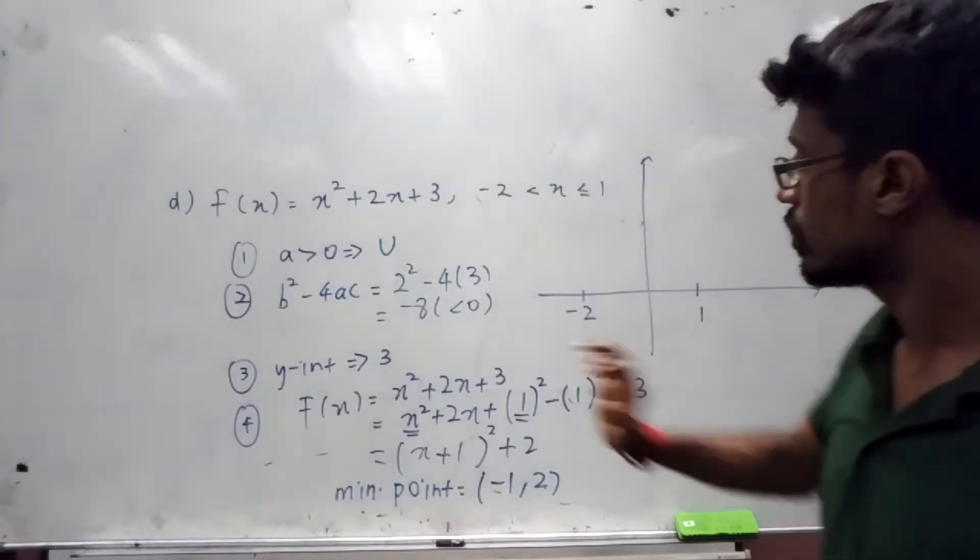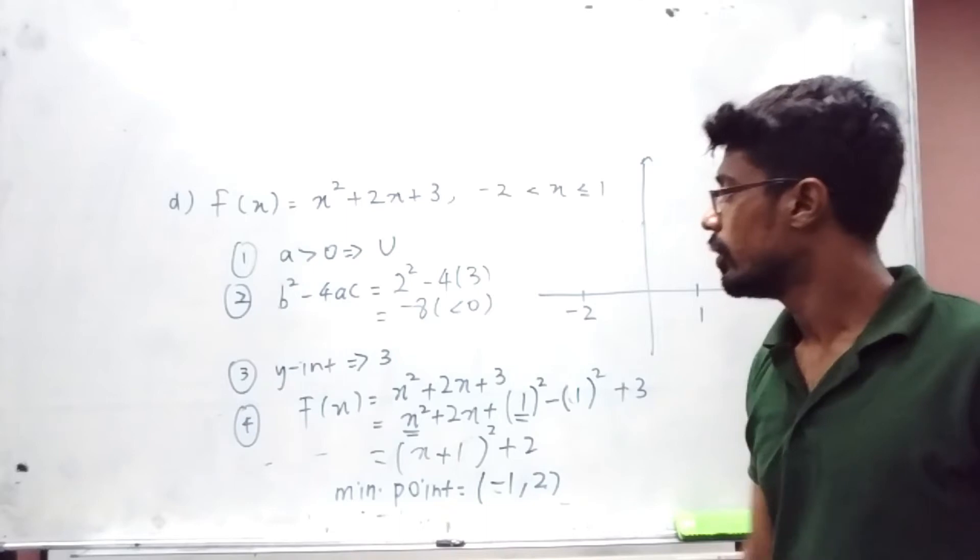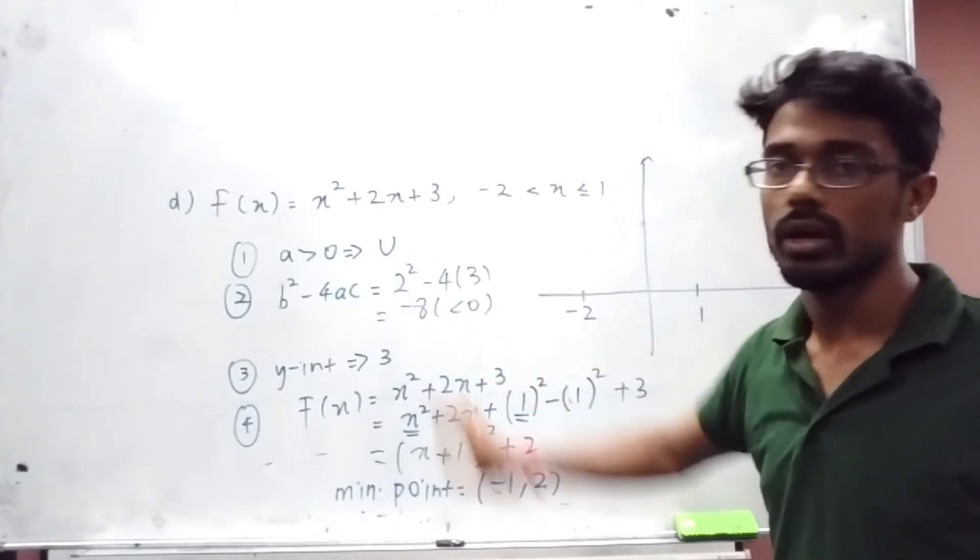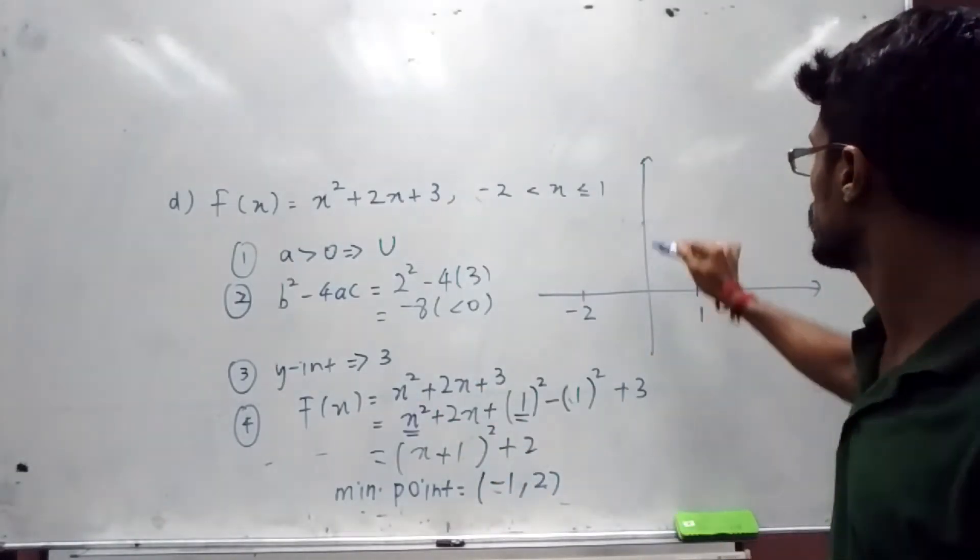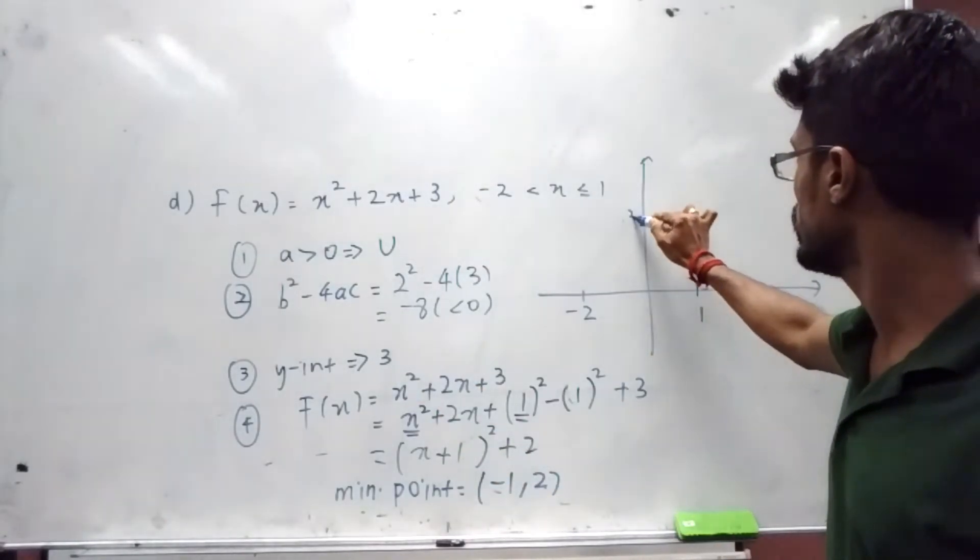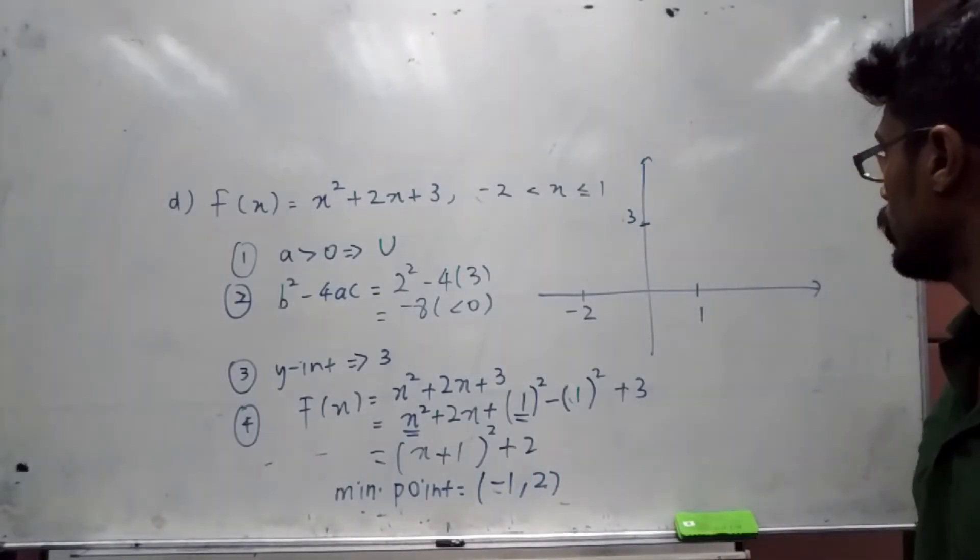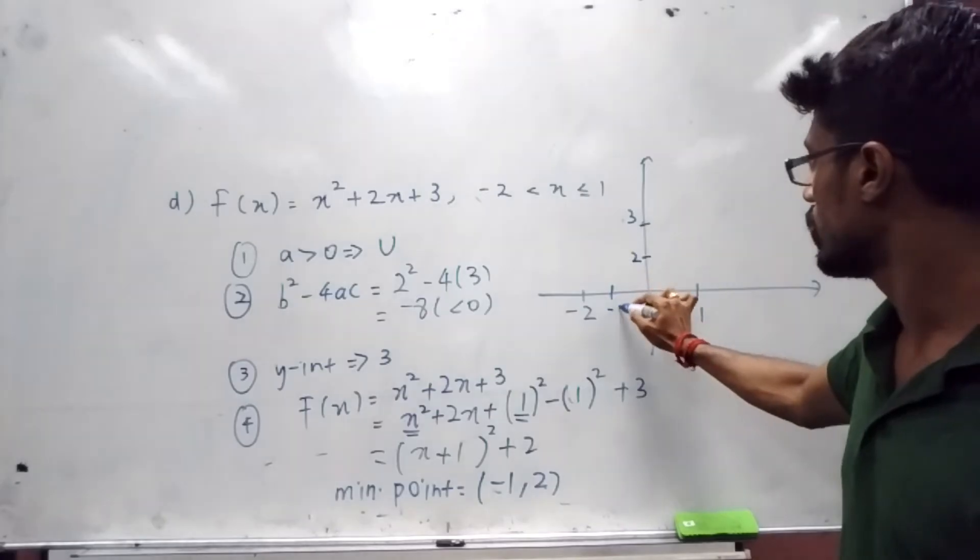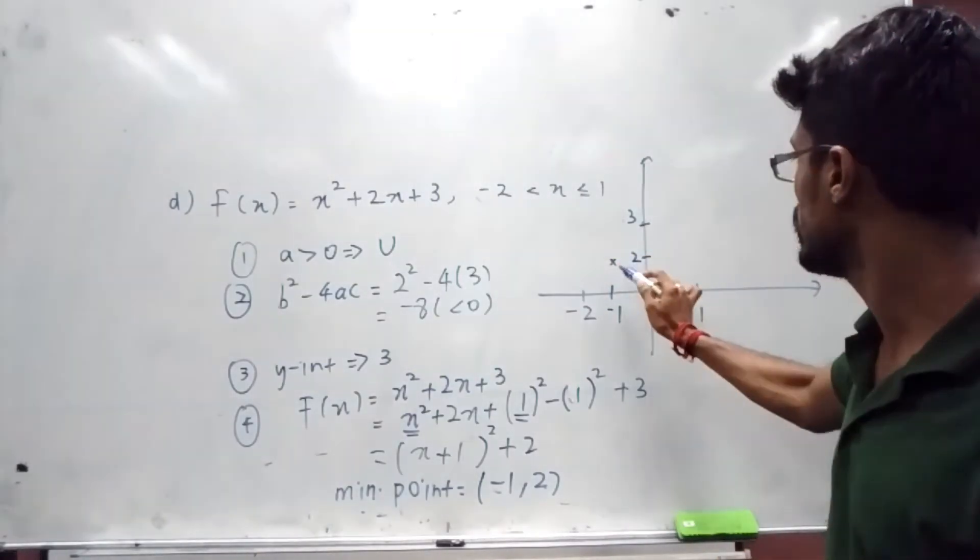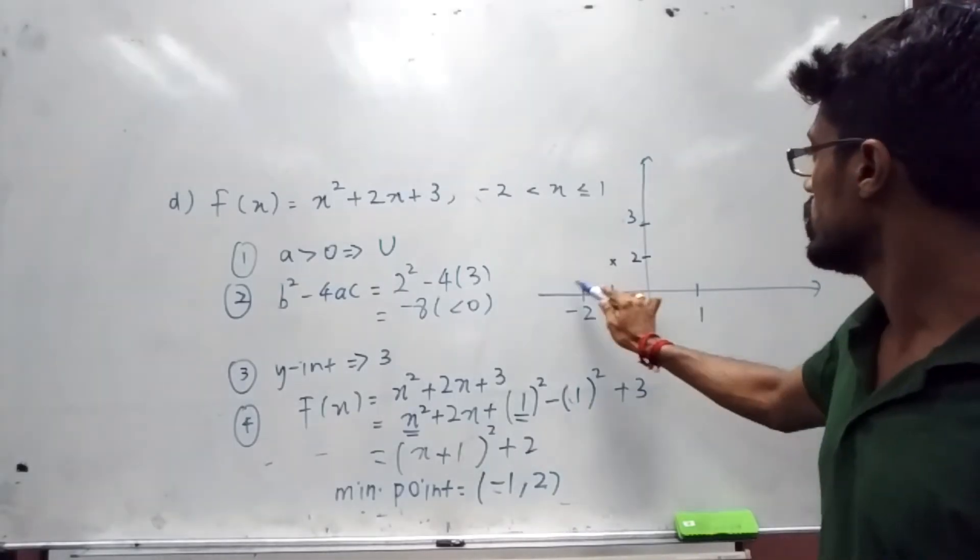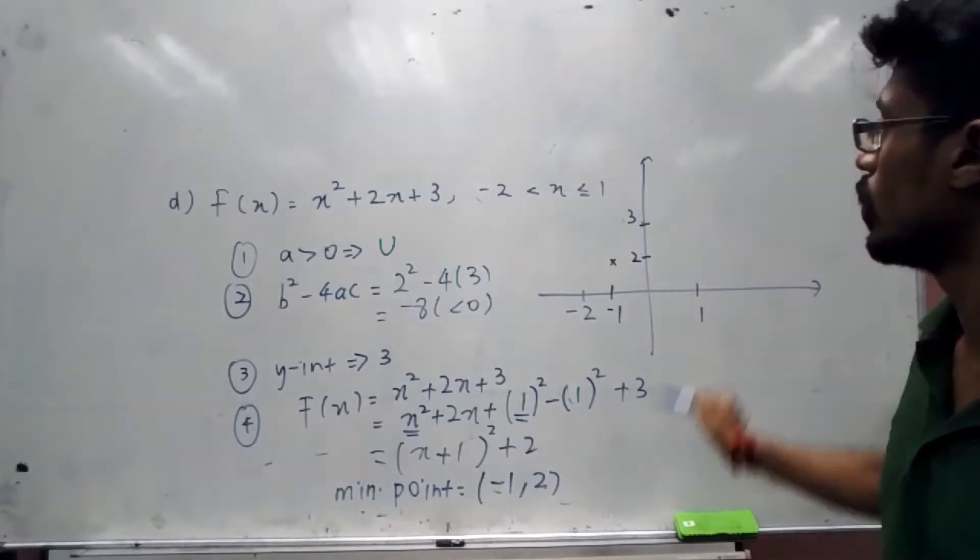We look one by one. This is your happy graph, so that's the shape. It doesn't cut your x-axis. Y-intercept is 3, so I can put my 3 there. Minimum point is (-1, 2). Your 2 is here, this is your -1, so your minimum point will be here. I just have to fit in this guy.